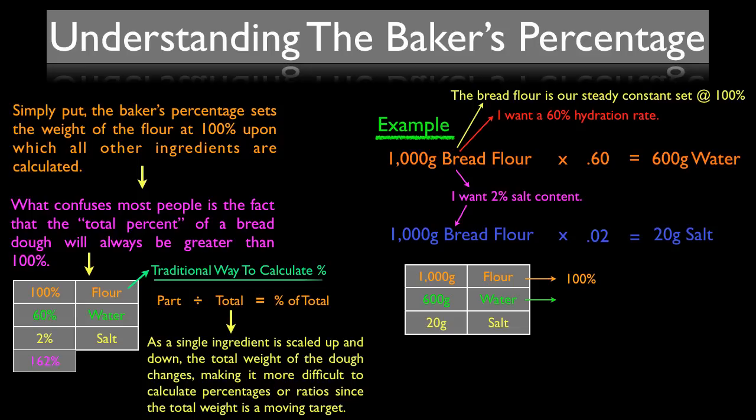To figure out your hydration rate, take your amount of water, 600 grams, and divide that by the total amount of flour, 1,000 grams, which gives you 0.60 or 60 percent. The same can be done with salt content or any other ingredient in your bread dough. Take your 20 grams salt, divide by the total weight of flour, 1,000 grams, which gives you 0.02, or 2% salt content.